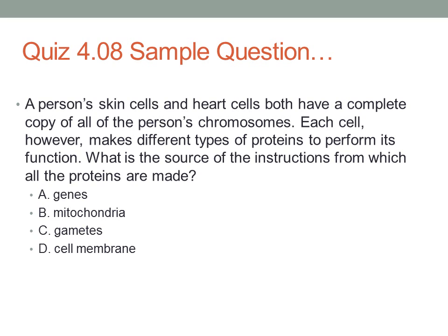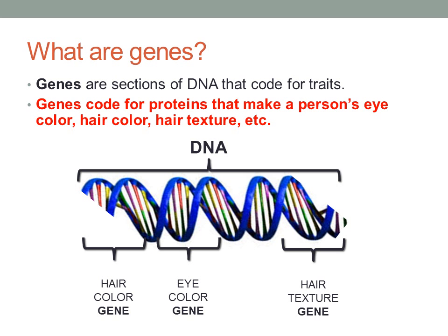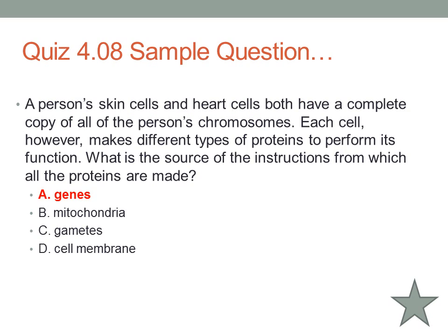So where do we get all the instructions that we need in order to make proteins? If we go back a couple of slides, we see that genes actually code for proteins. They're the ones that have the information that determines the person's eye color, their hair color, etc. So the best answer for this one would be A. Genes.